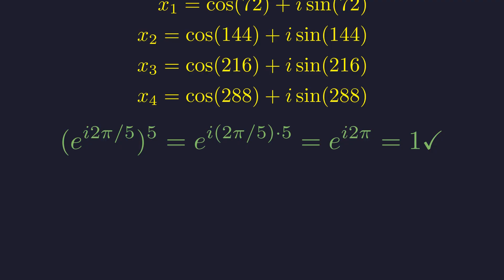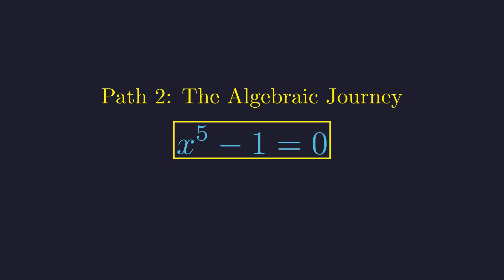That was elegant! But a true mathematician is never satisfied with just one path to the truth. Can we find these roots with raw algebra alone, without pictures or angles? Let's find out! Let's return to the beginning and see if we can solve this without any pictures or polar coordinates. We start again with our original equation. This expression is a difference of fifth powers. There's a well-known factorization formula for such expressions.